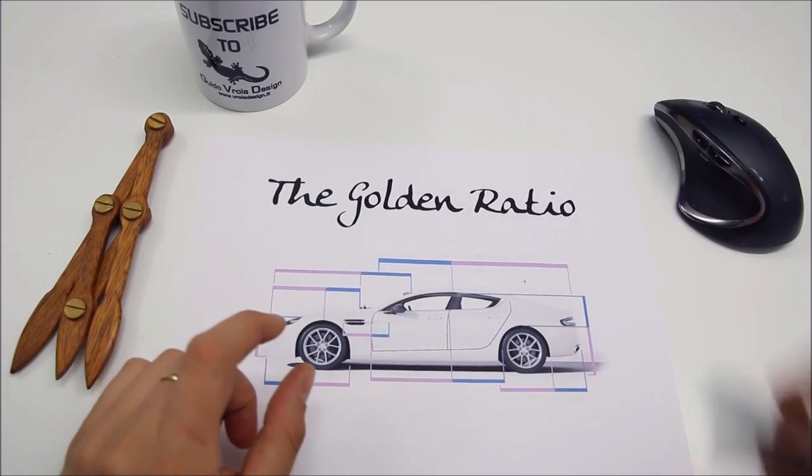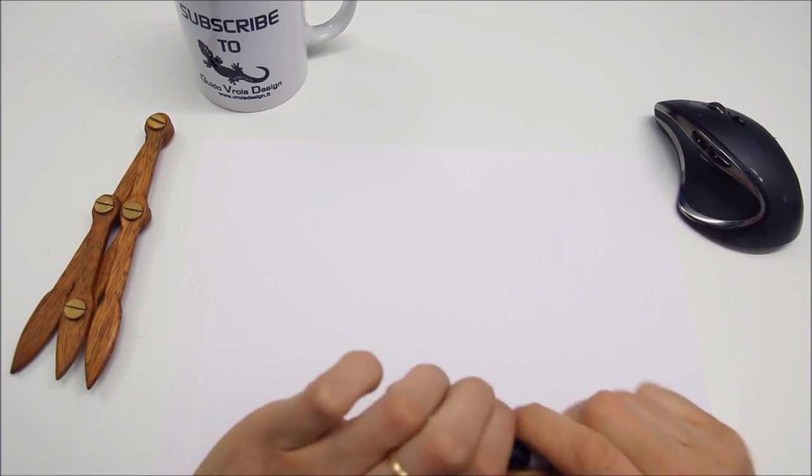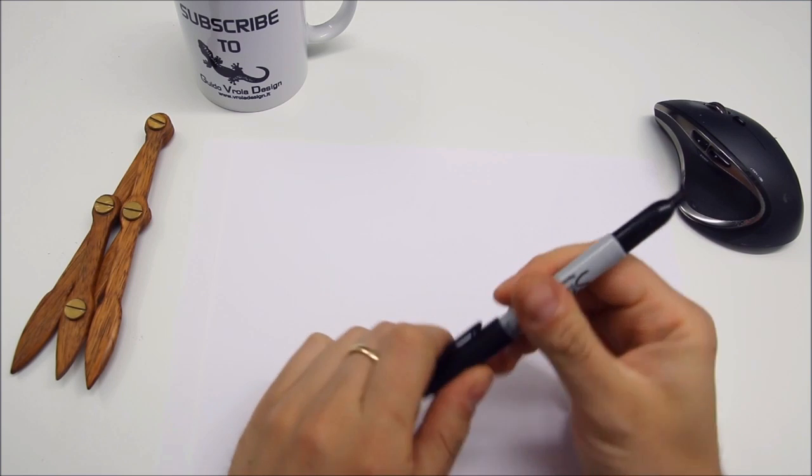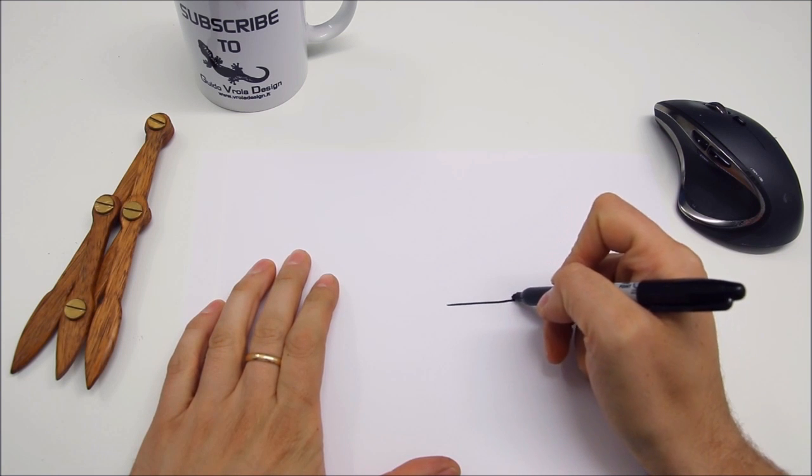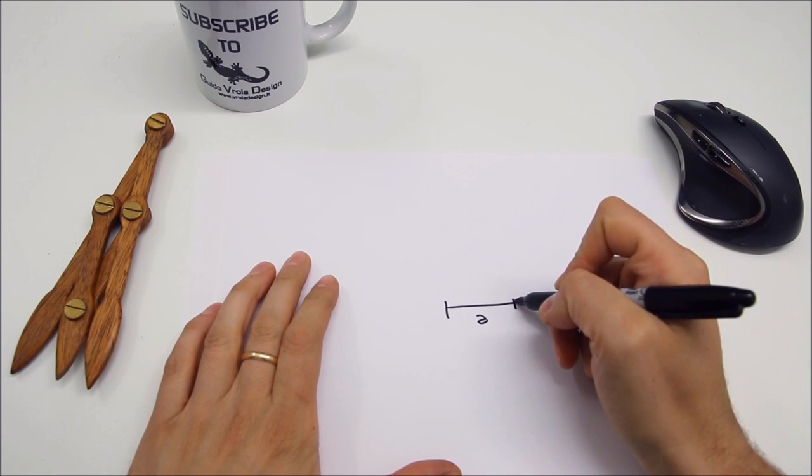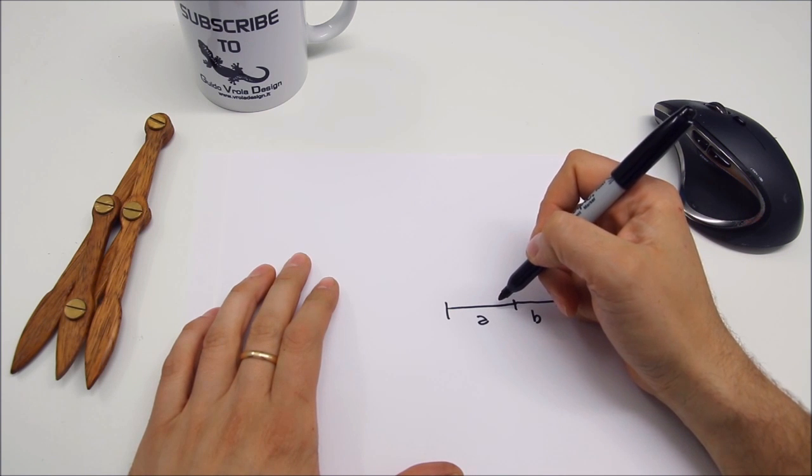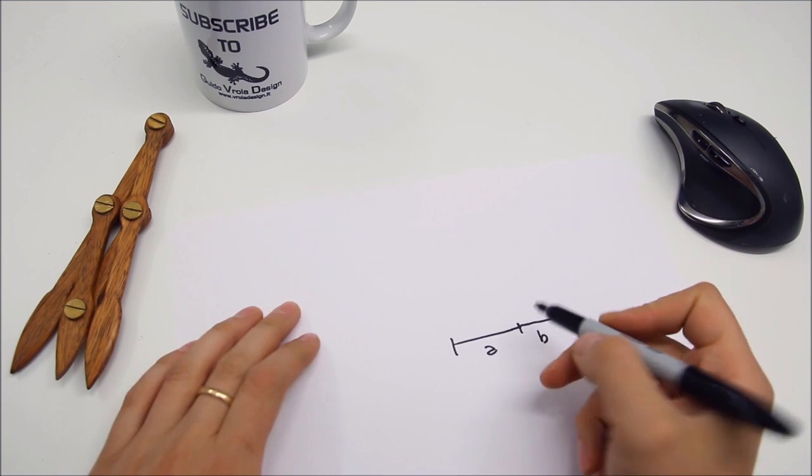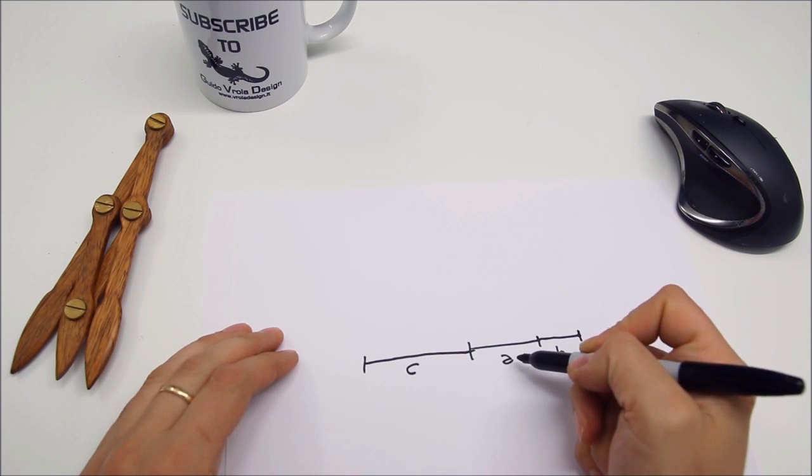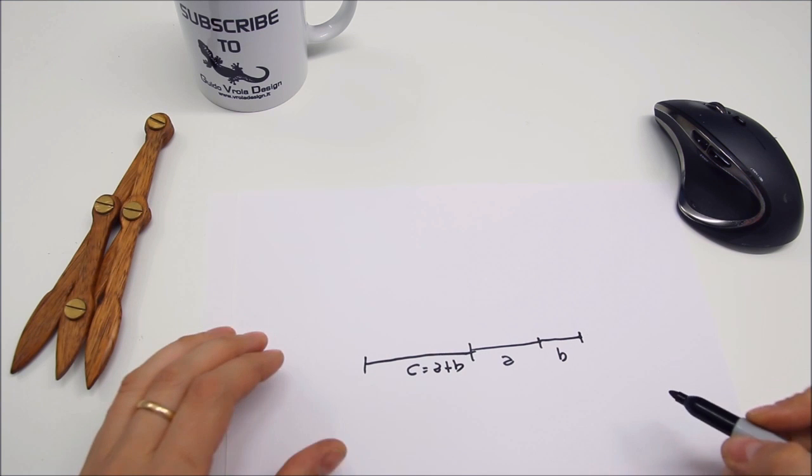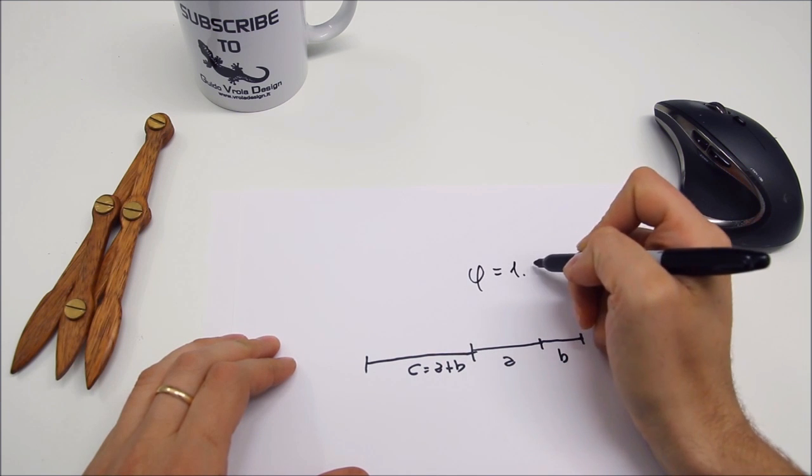So let's see what is this ratio. This ratio is a number called phi that can be approximated to 1.618. This number has a lot of interesting properties, but the most important for us is that if we draw a segment longer 1.618 called A and the segment B long one, the proportion between segment A and segment B is the same that we have between segment C and segment A where C is A plus B. And this ratio is equal to phi that is 1.618.